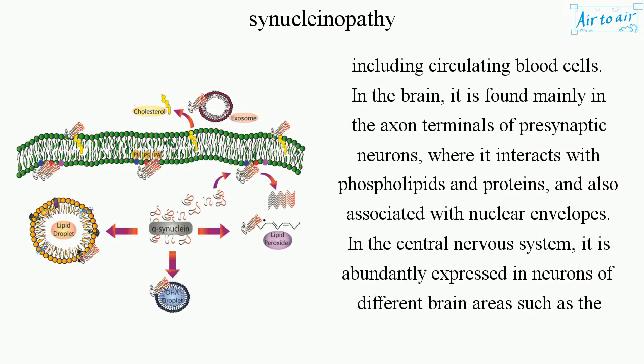In the brain, it is found mainly in the axon terminals of presynaptic neurons, where it interacts with phospholipids and proteins, and is also associated with nuclear envelopes.